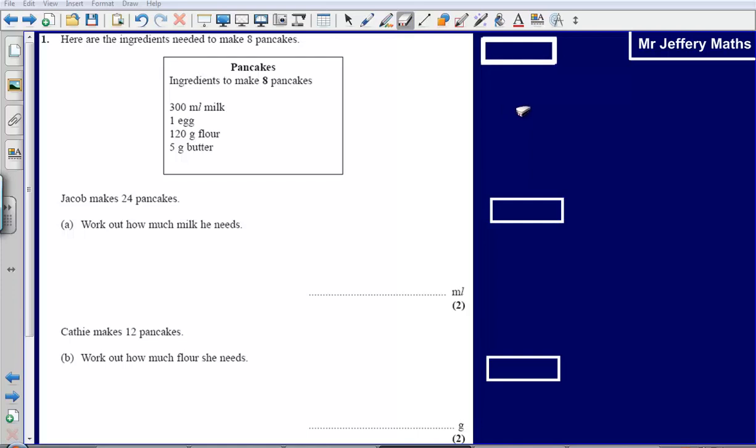This is question 1 from the 2008 higher tier GCSE Maths paper, which is a non-calculator paper. Here we're given a question about pancakes. We're told to make 8 pancakes given these ingredients. Jacob needs to make 24 pancakes, work out how much milk he needs.